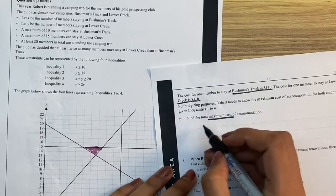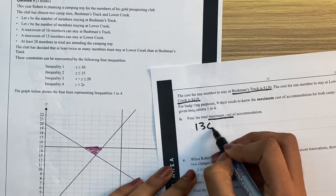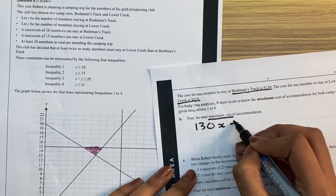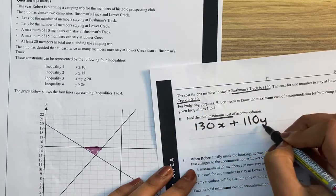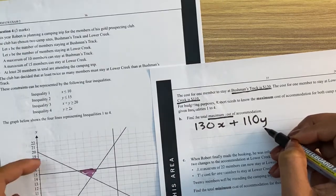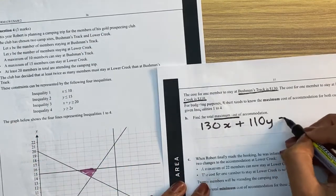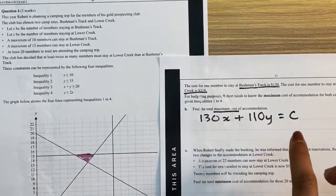So we can say that it's going to cost 130 times x plus Lower Creek is 110. So it's going to be 110 times y, because y is Lower Creek. So that is going to equal our cost. That is our function.